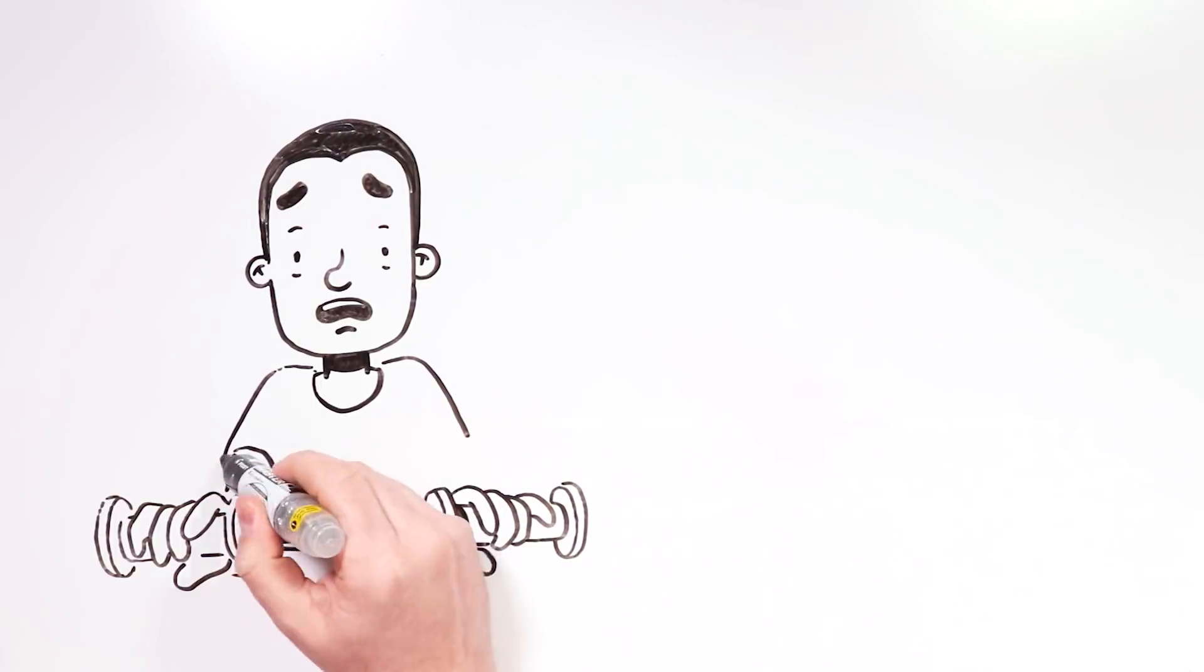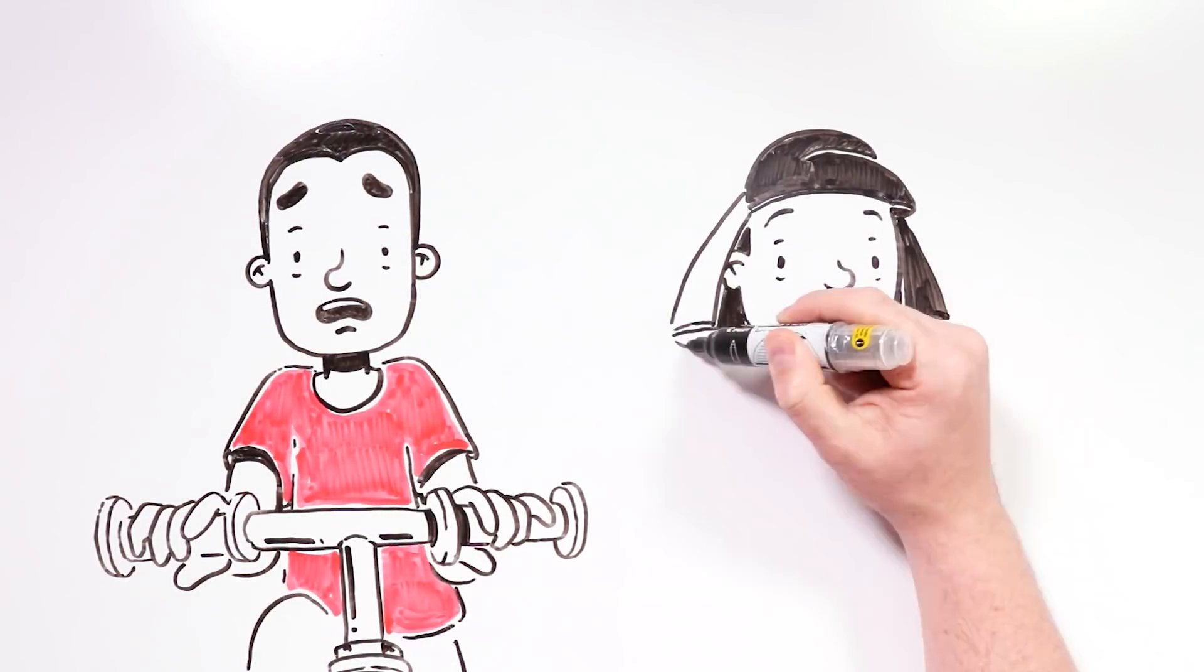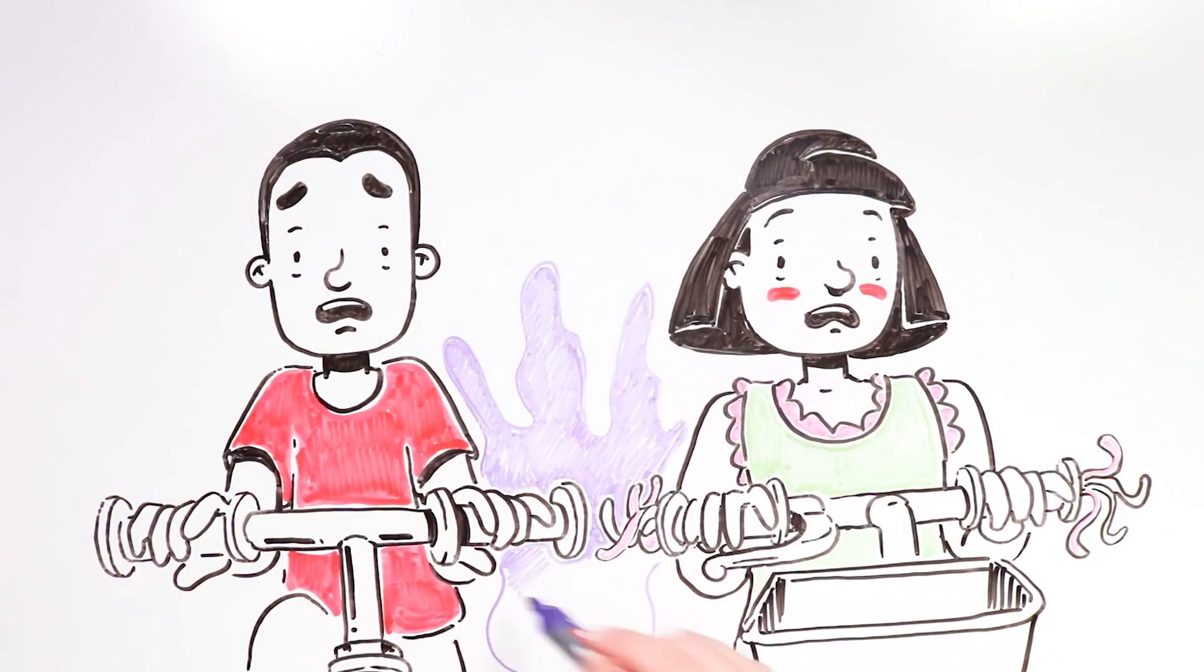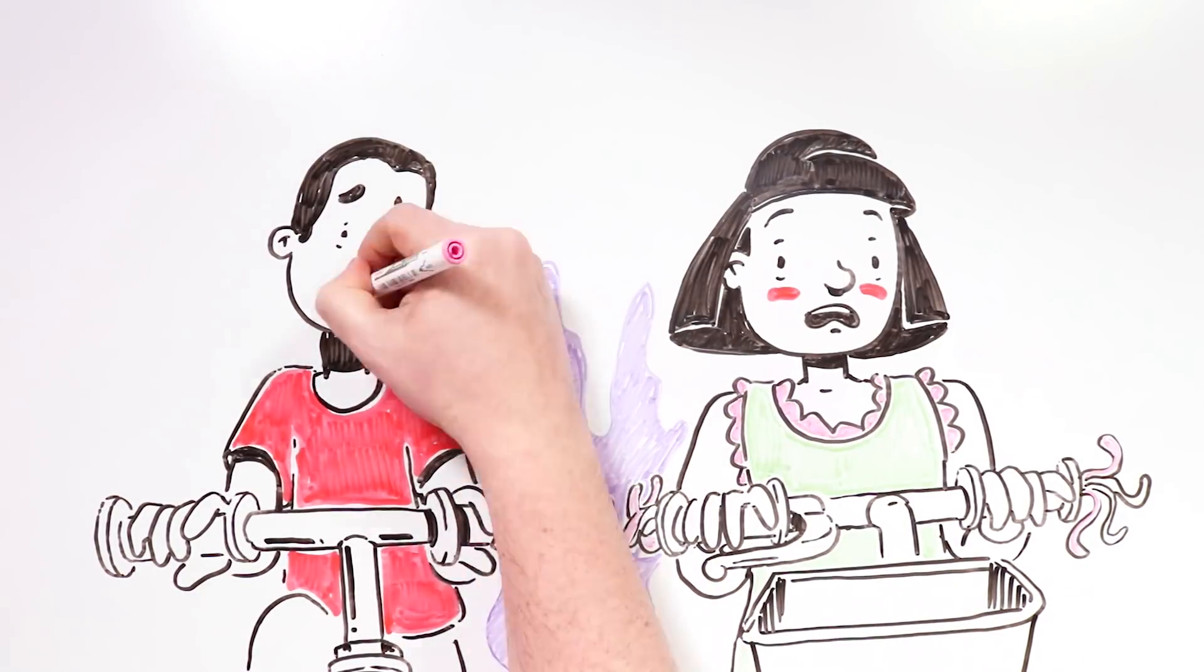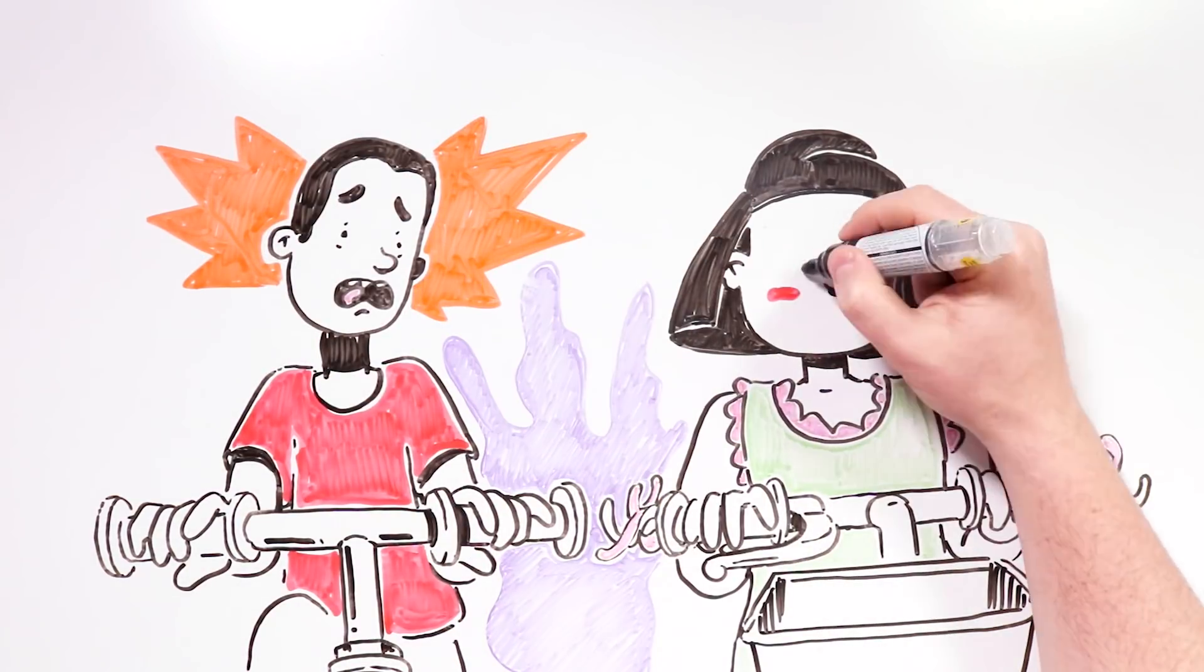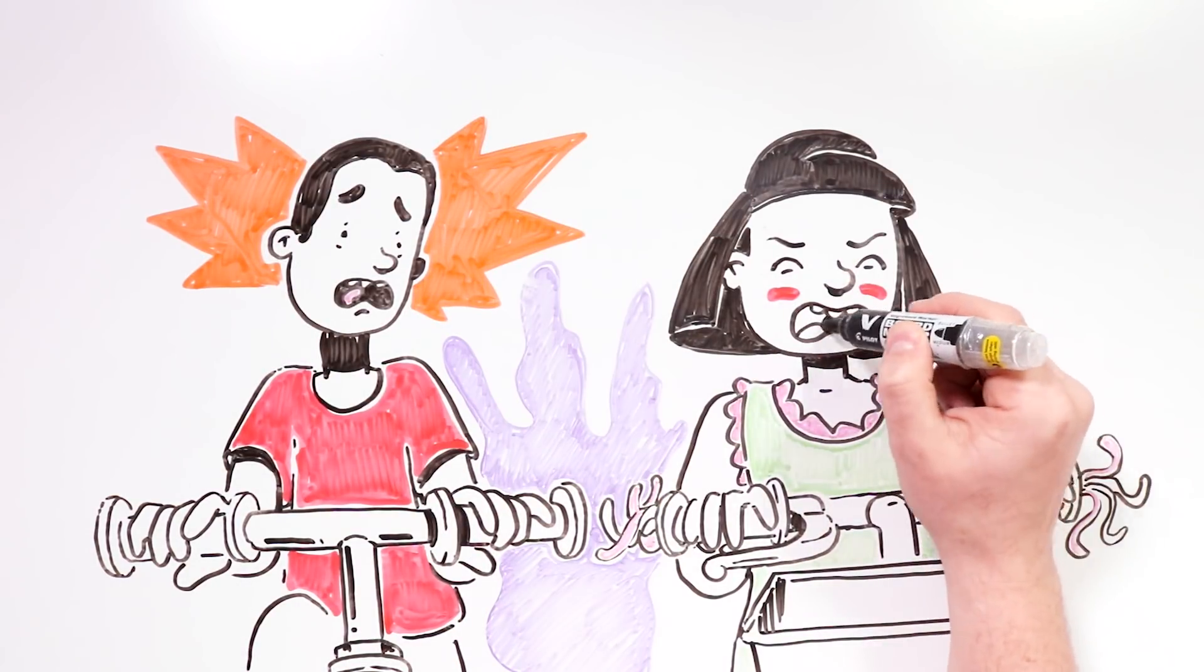Two meters later, we heard the moan again, much clearer and closer. It seemed like someone was following us. Juan looked back and turned very pale. He started yelling at me to pedal as fast as I could and to not get off my bike. I couldn't look, but I knew from his face that I should listen to him.